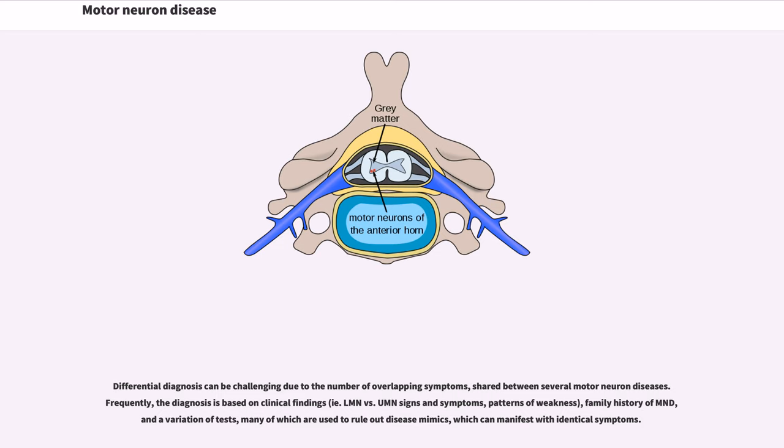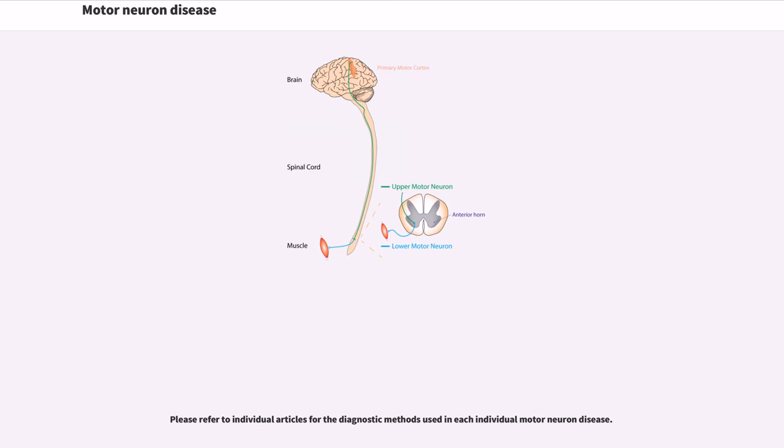Differential diagnosis can be challenging due to the number of overlapping symptoms, shared between several motor neuron diseases. Frequently, the diagnosis is based on clinical findings, e.g., LMN vs UMN signs and symptoms, patterns of weakness, family history of MND, and a variation of tests, many of which are used to rule out disease mimics, which can manifest with identical symptoms.